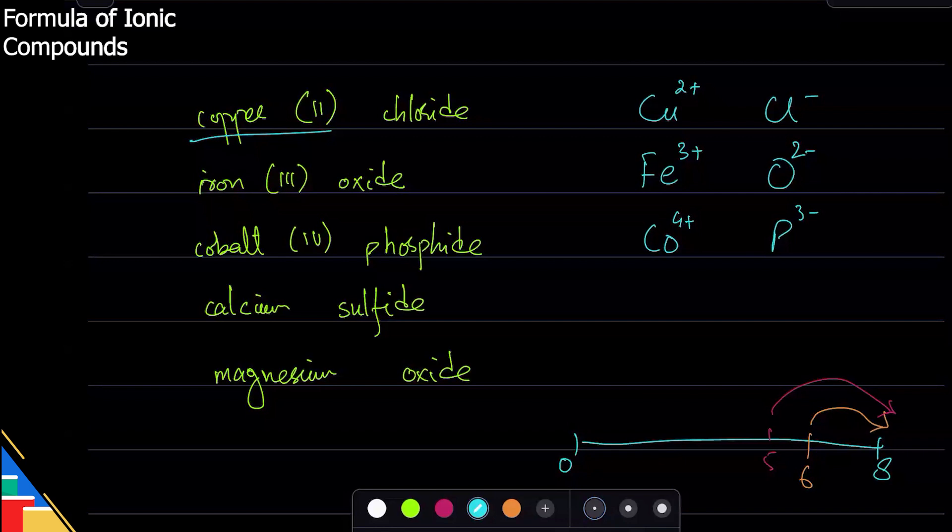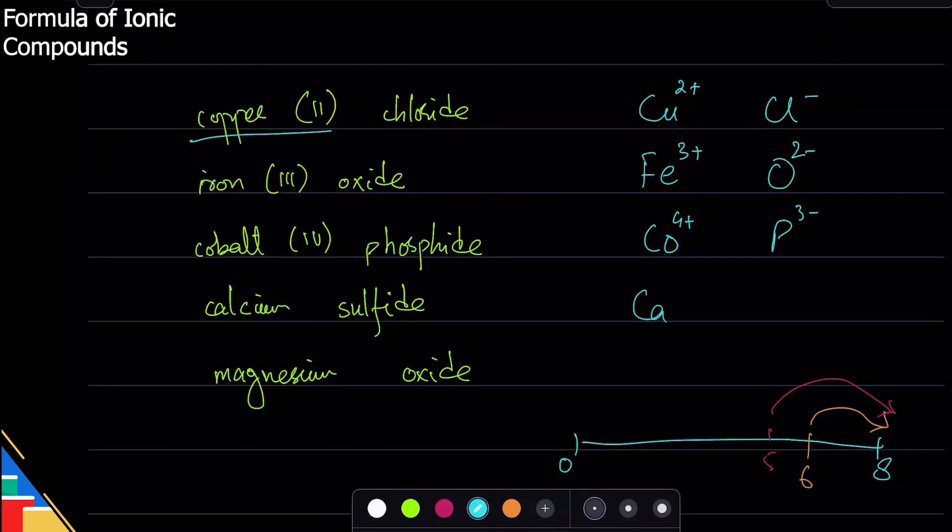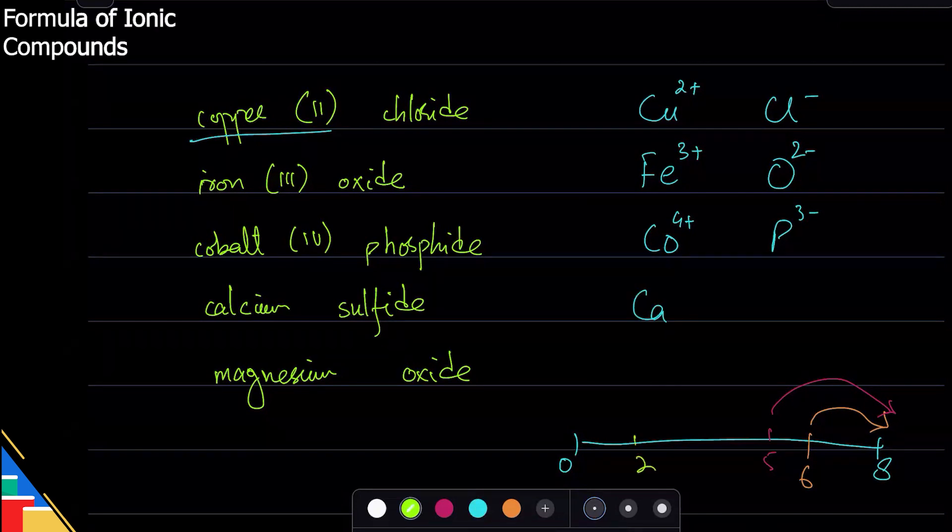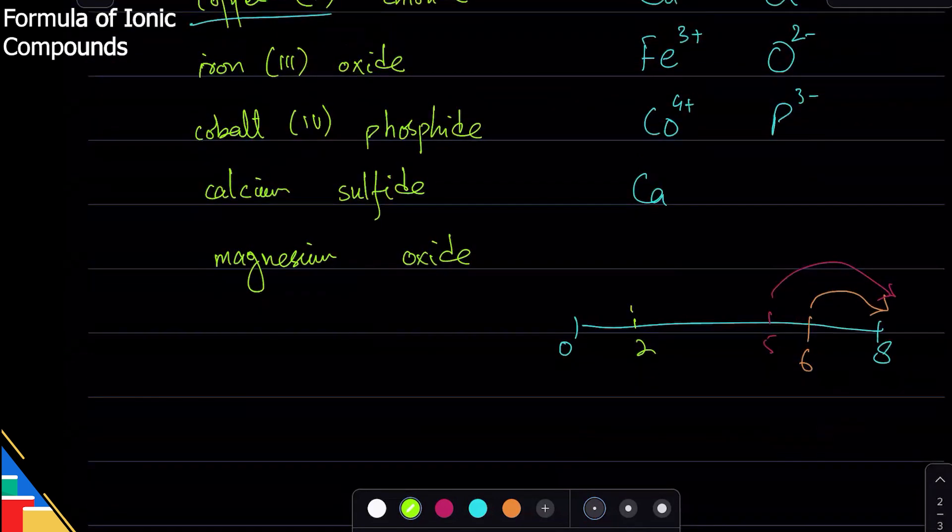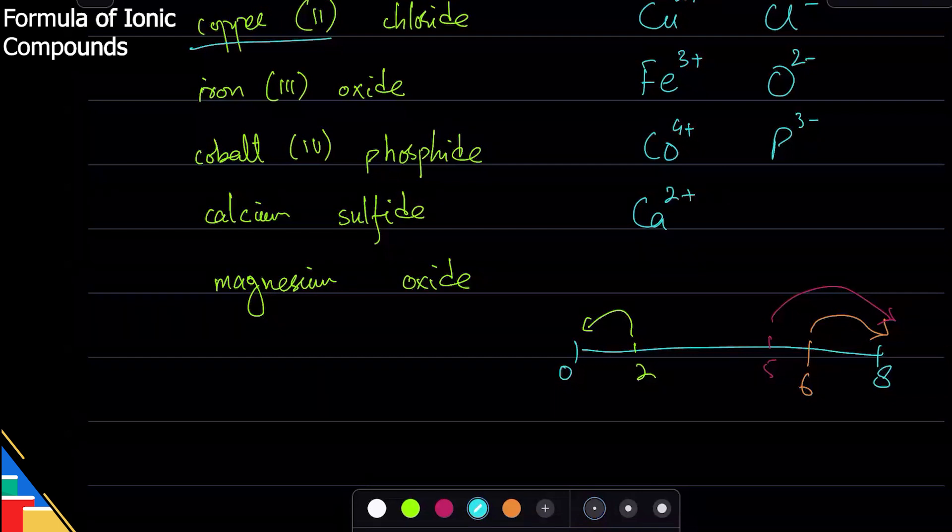Calcium sulfide: Ca - calcium in the periodic table is in group two, which means it will go to zero. It will not go to eight because zero is closer, so it will lose two electrons. That is plus two. And sulfide - that is at six, so it will go to minus two.